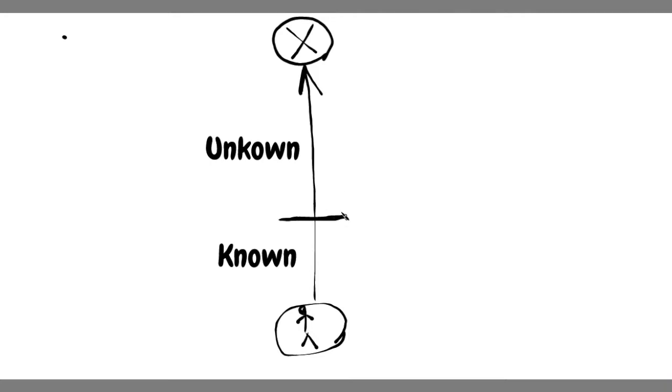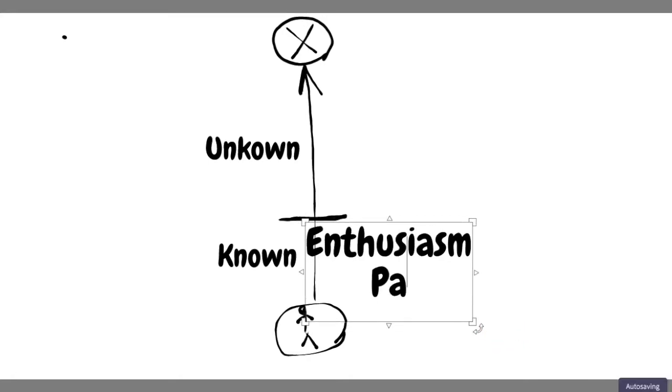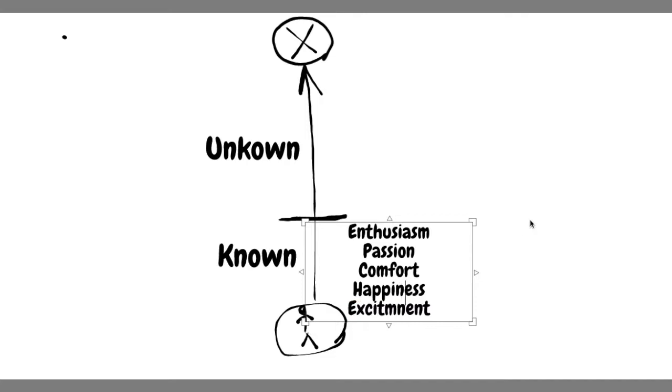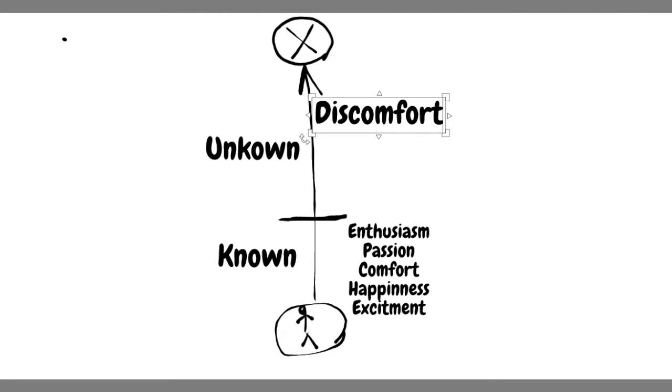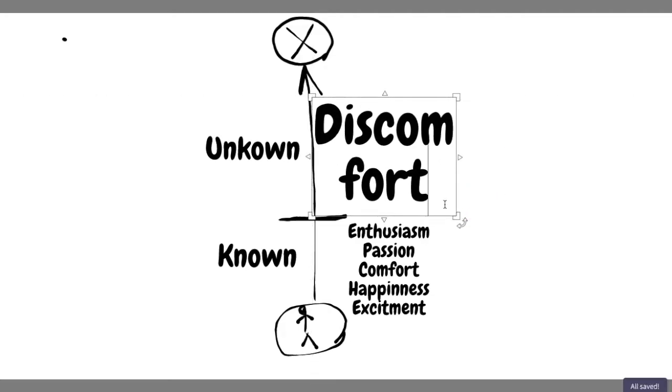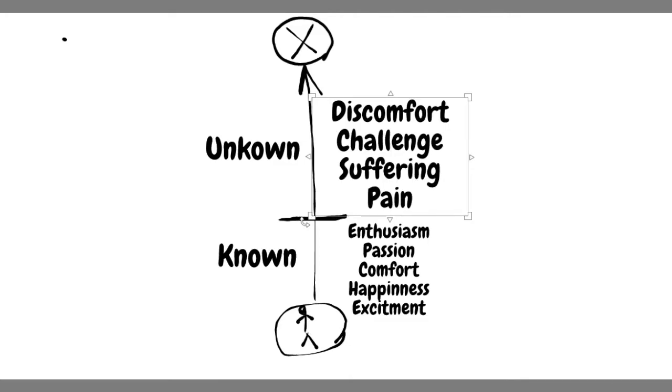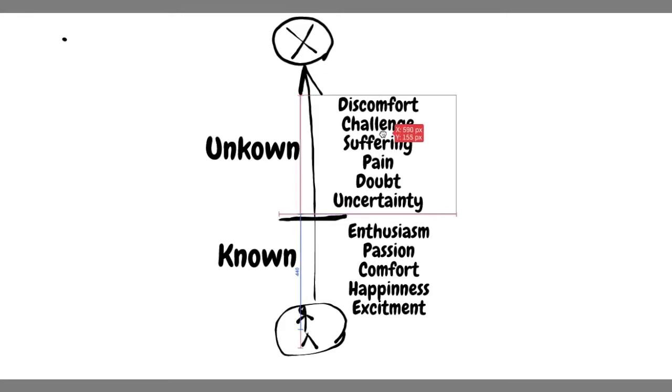So, something challenging happened, maybe the goal ends up taking more time than you thought, maybe you need skills that you didn't know you need. And what usually happens is, at this point, the beginning, what you see is mostly enthusiasm, a lot of passion. So, you see passion, comfort, happiness, excitement, basically a lot of really positive emotions that are related to the beginning of achieving your goal. And these awesome feelings, they will pass, and they will be replaced eventually by the unknown zone, where what you have is mostly discomfort, lack of enthusiasm, challenge, suffering, pain, doubt, uncertainty, basically everything that you don't like in life.